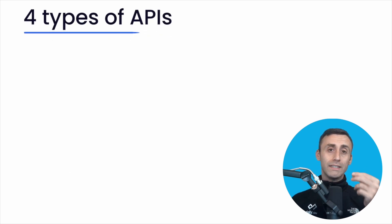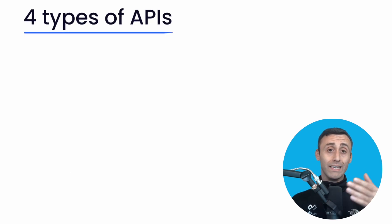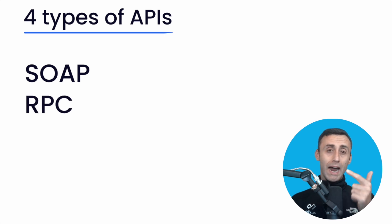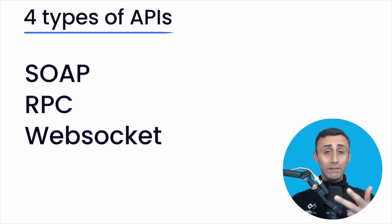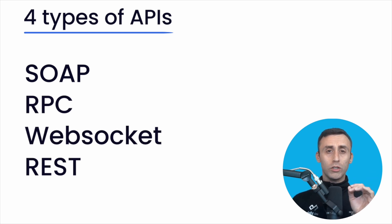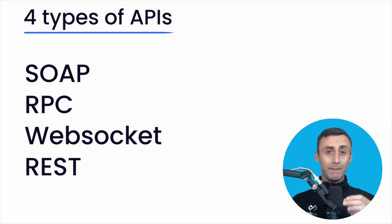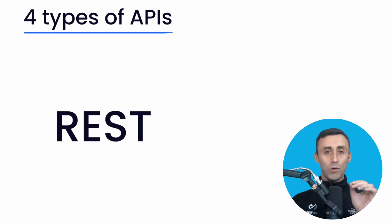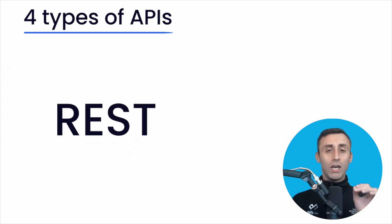There are four different types of APIs that are widely used: SOAP, RPC, WebSocket, and REST. We'll focus on the one that is the most popular and flexible API architecture, and that is REST APIs.